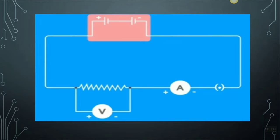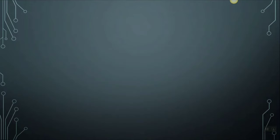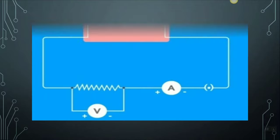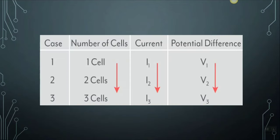In the second case, connect two cells in the circuit. Note the respective readings of the ammeter and voltmeter. The ammeter gives the value of current through the nichrome wire and the voltmeter gives the potential difference across the nichrome wire. Let's say the readings are I2 and V2 respectively. Then repeat the same procedure for the third case, when three cells are used as a source. You will notice that as the number of cells increases, the current as well as the voltage increases.